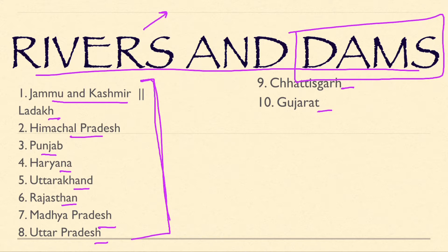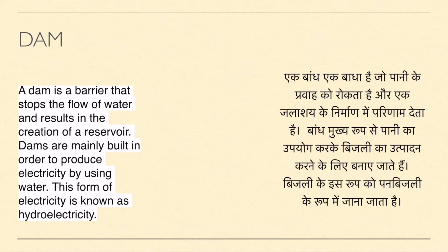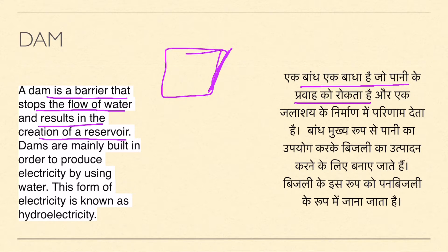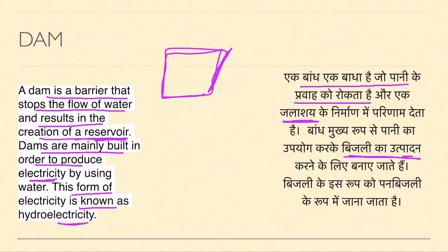In this video we will cover the important dams of various states - only the important ones, because normally any state has around a hundred dams. First, what is a dam? A dam is a barrier that stops the flow of water. It results in the creation of a reservoir. Dams are mainly built to produce electricity, called hydro electricity.